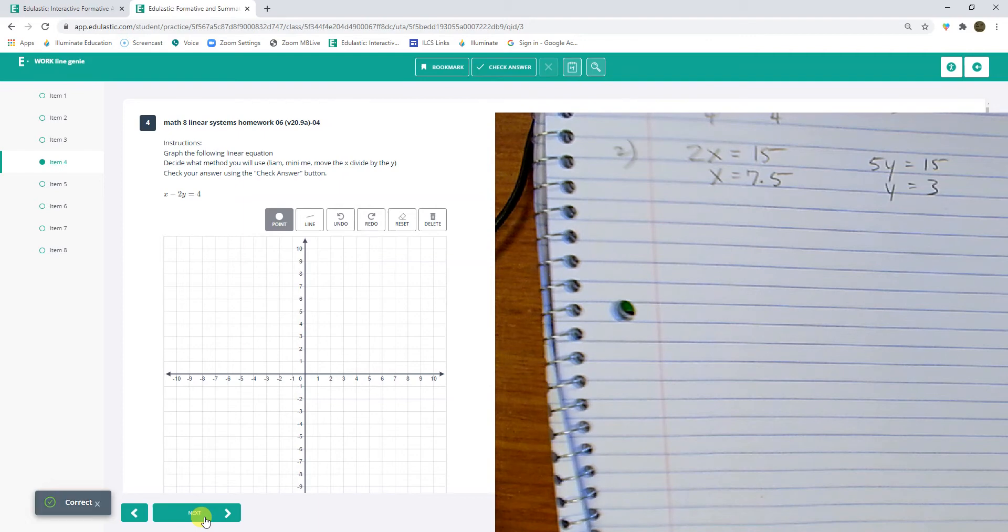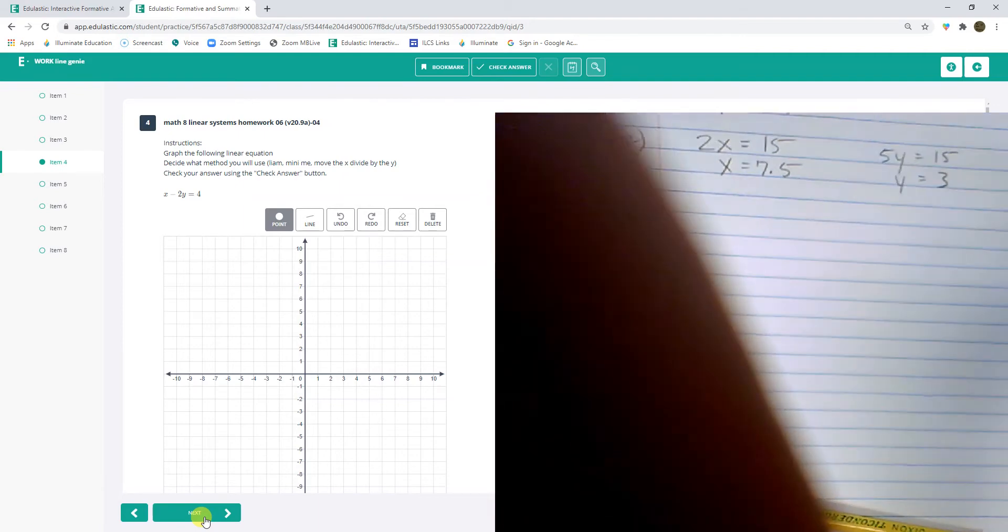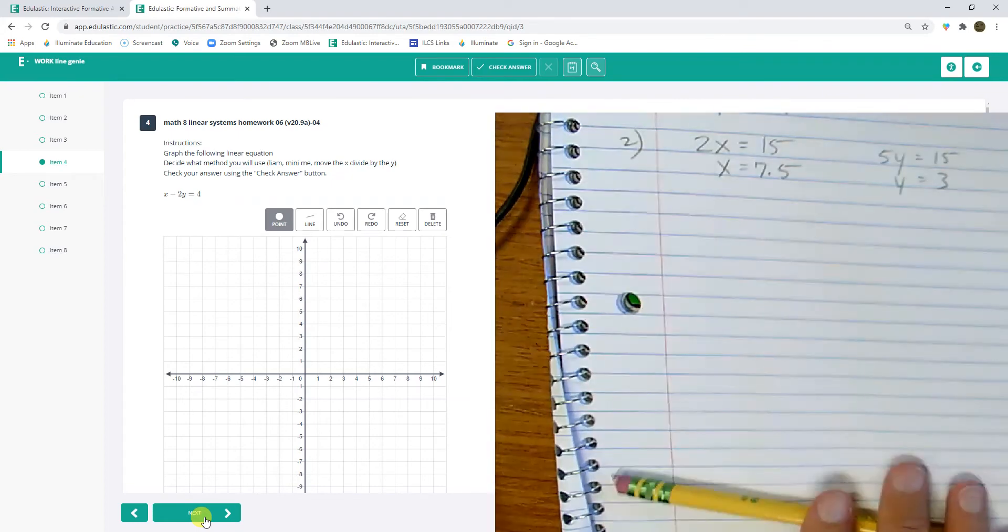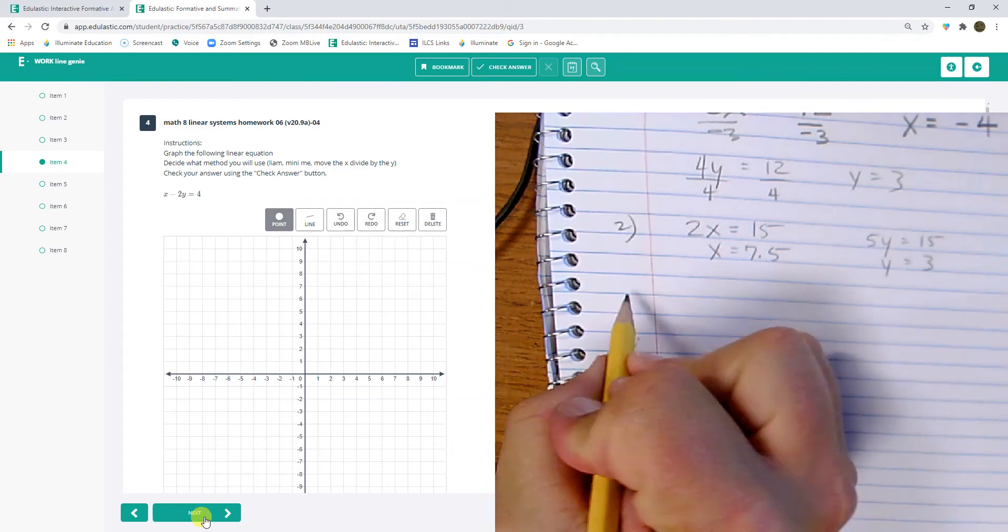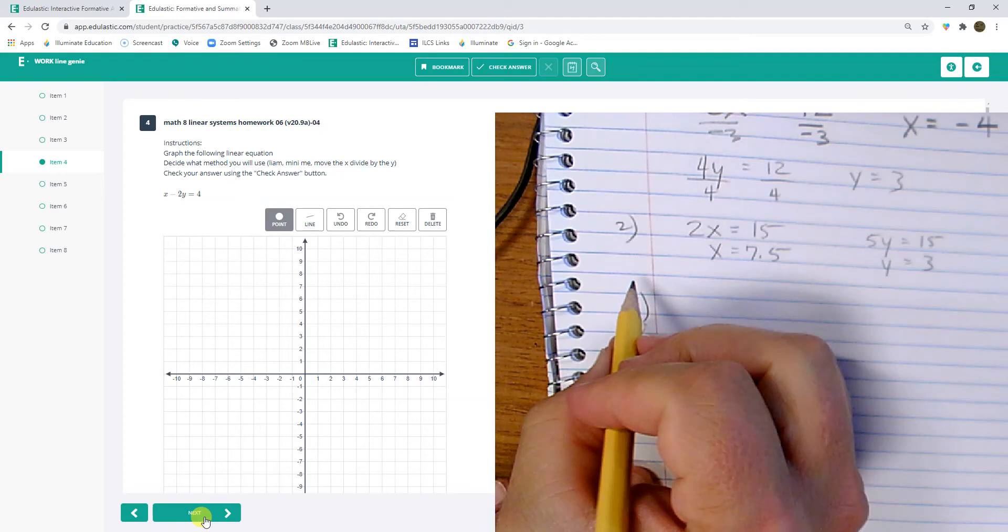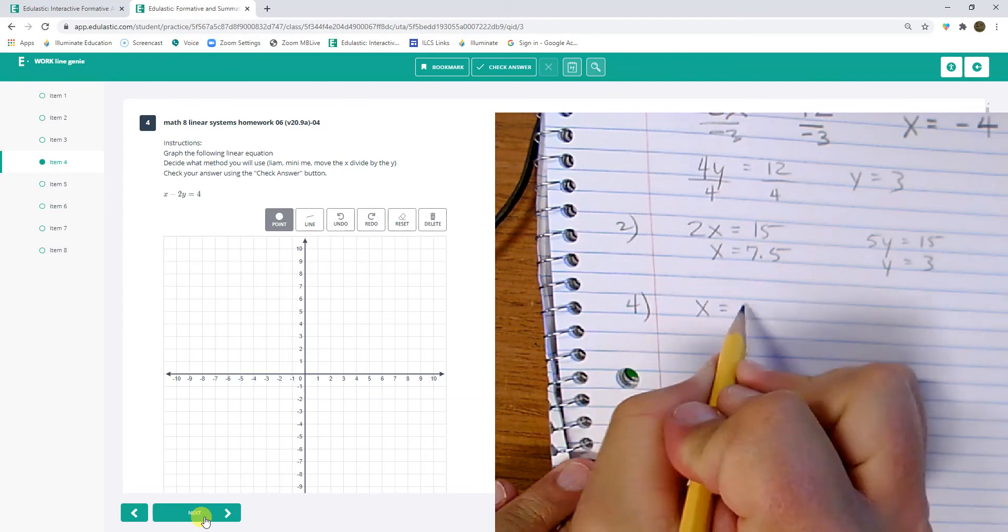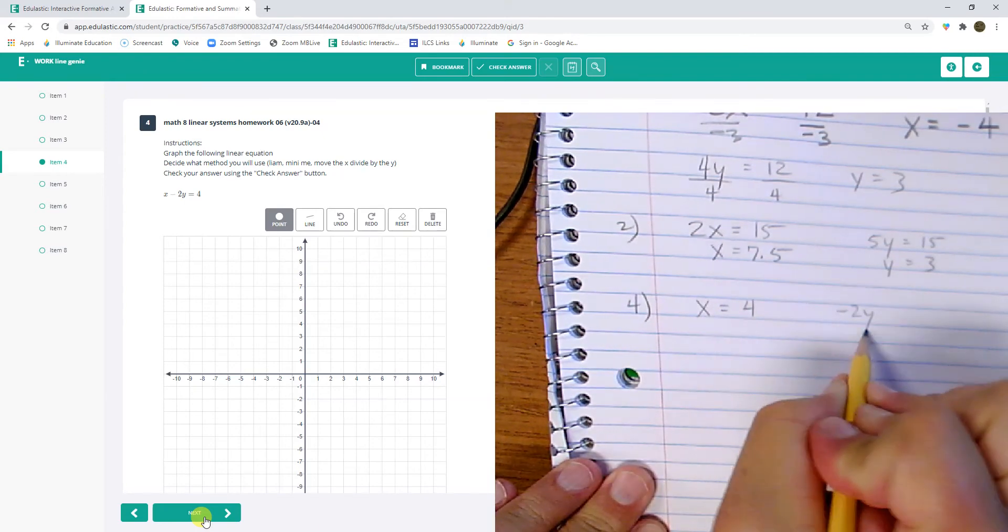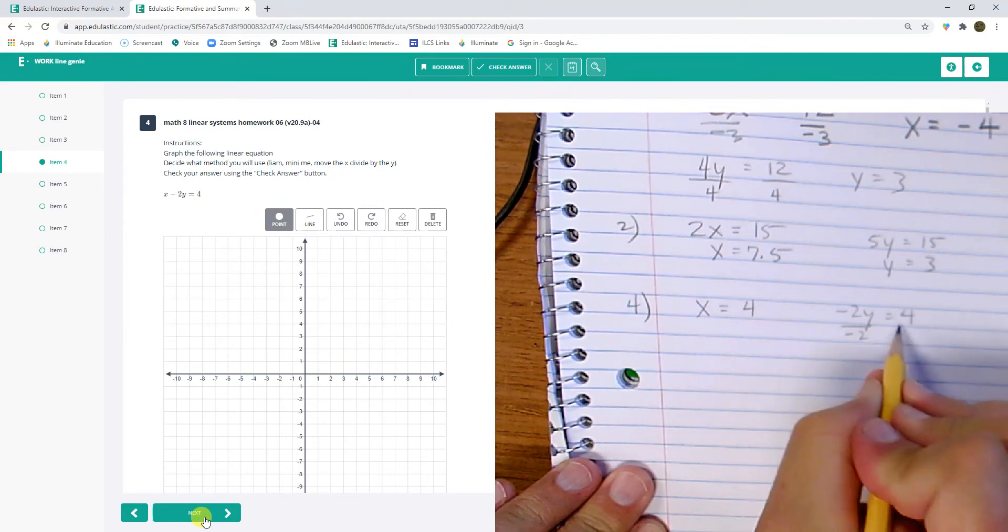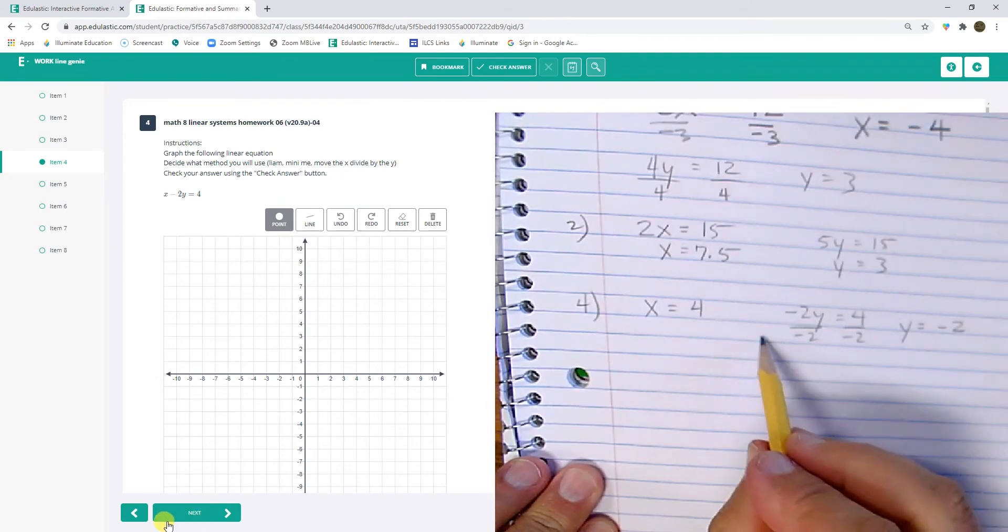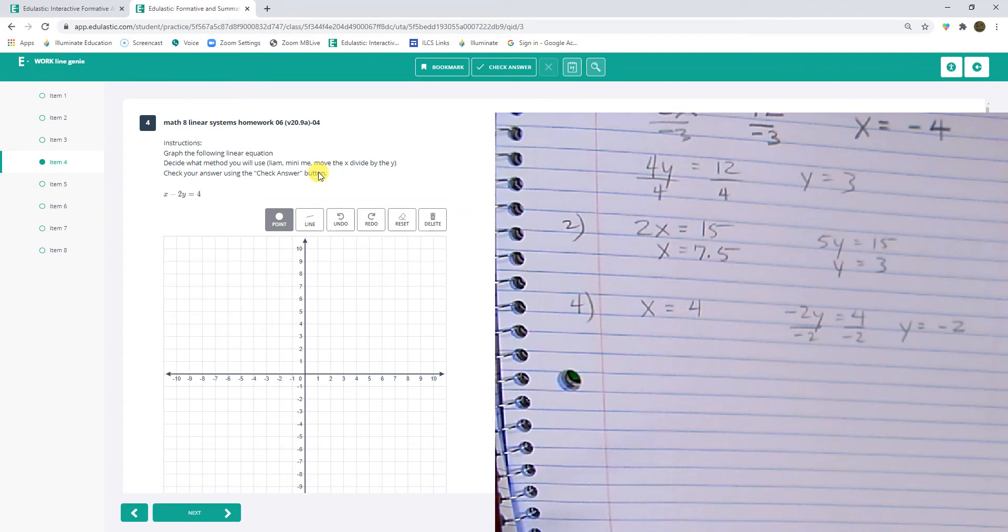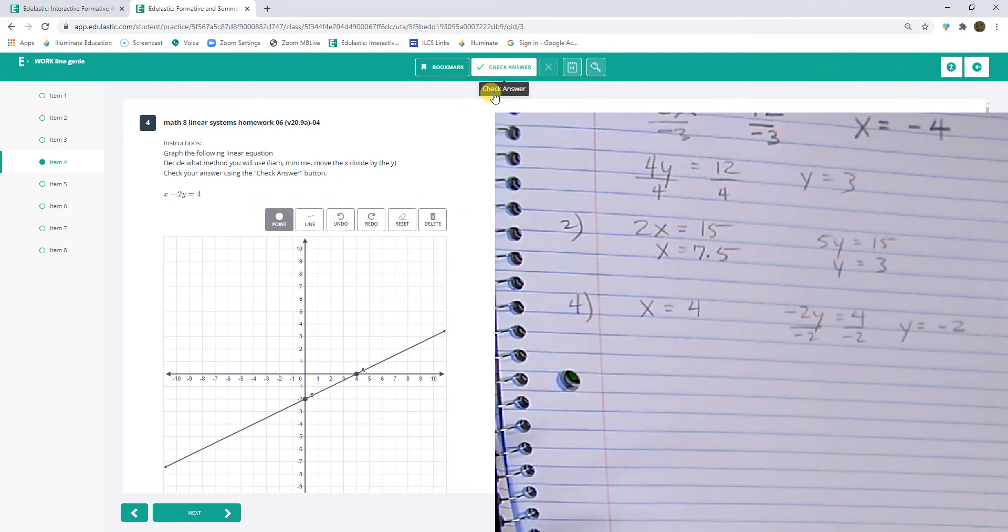All right, I'm going to do mini-me's on this one. So this is number 4. And I have x equals 4. And I have negative 2y equals 4. So y equals negative 2. So I have x equals 4 and y equals negative 2. x equals 4, y equals negative 2.